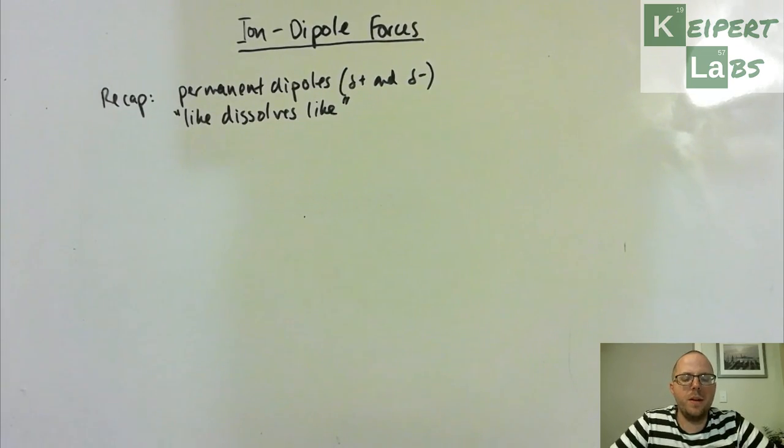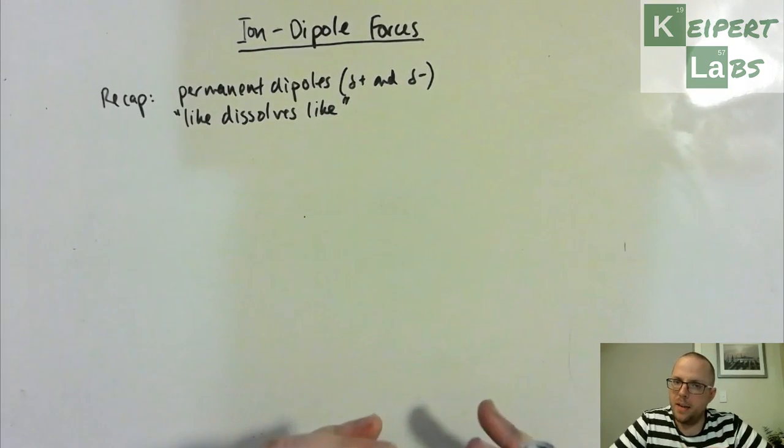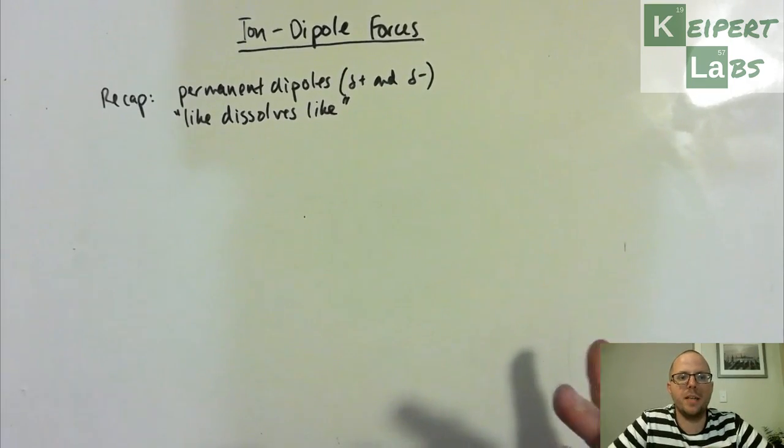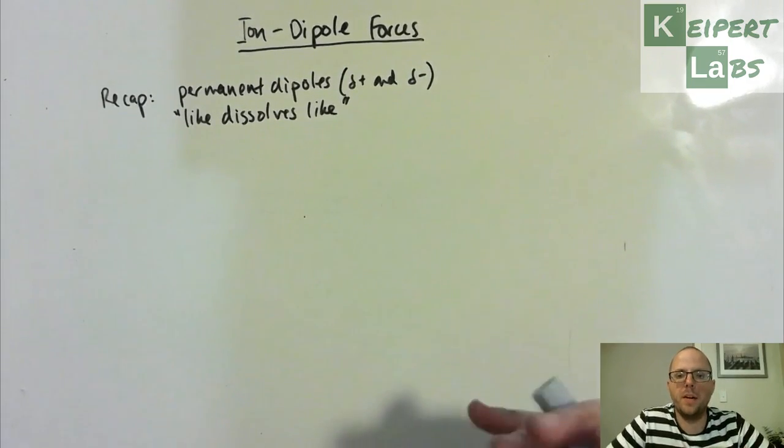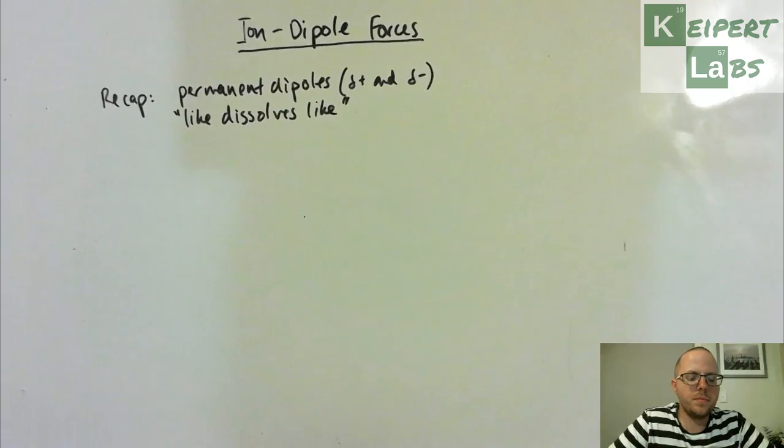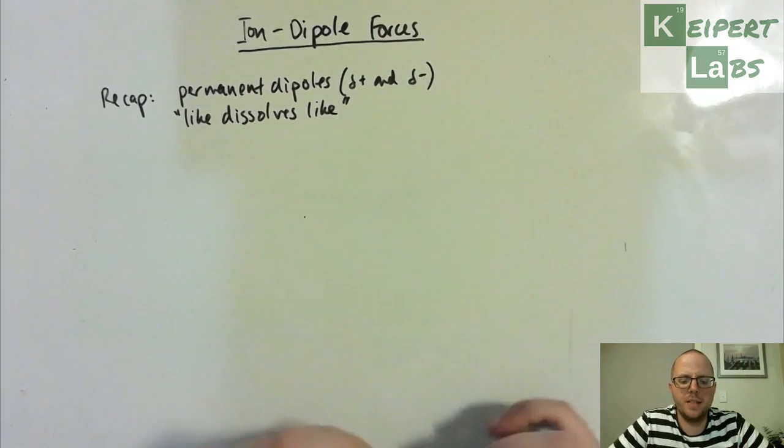And we've also looked at this idea of like dissolves like, or how polar and non-polar substances interact with each other, and how polar substances tend to interact together. Non-polar substances tend to interact together, but they don't mix with one another, like oil and water. If we want them to interact or dissolve or mix, we have to force it creatively instead.